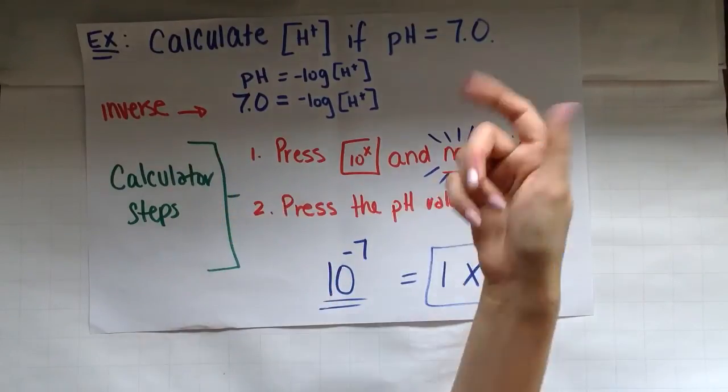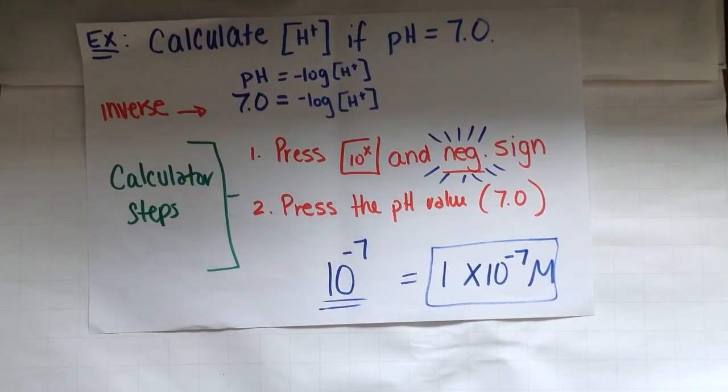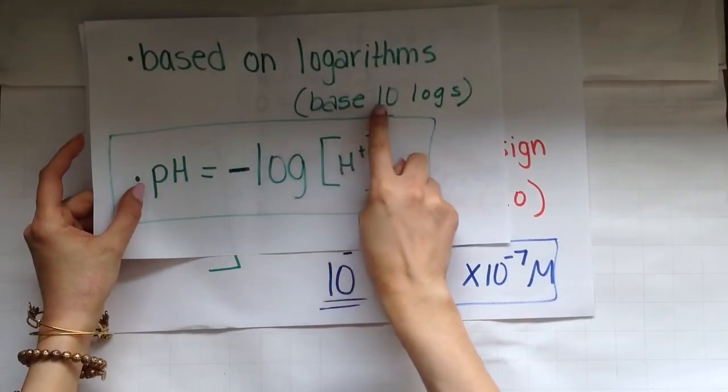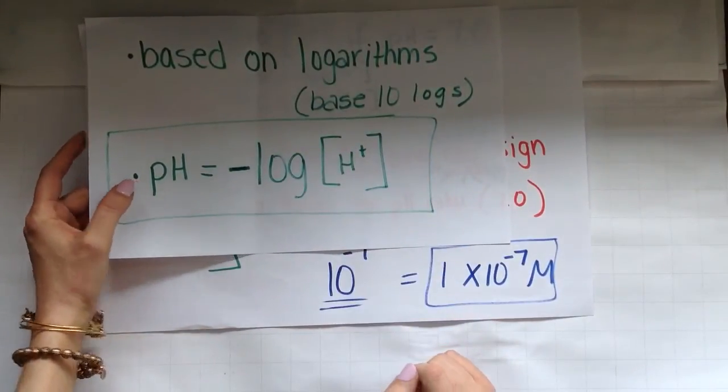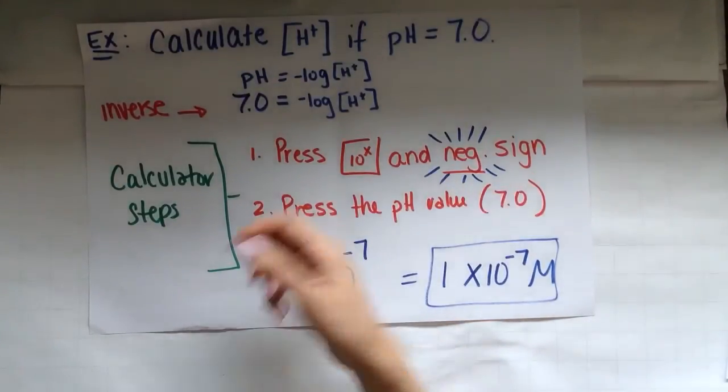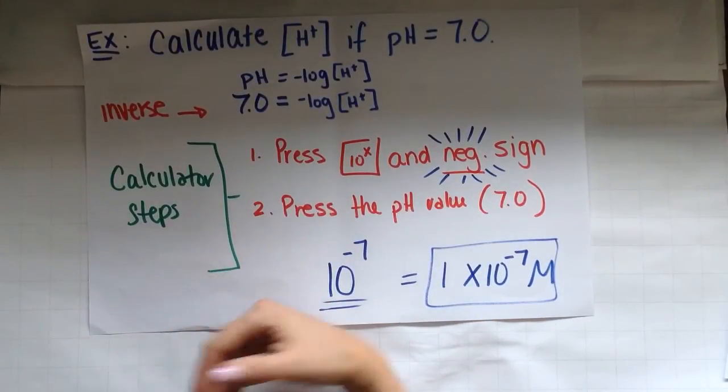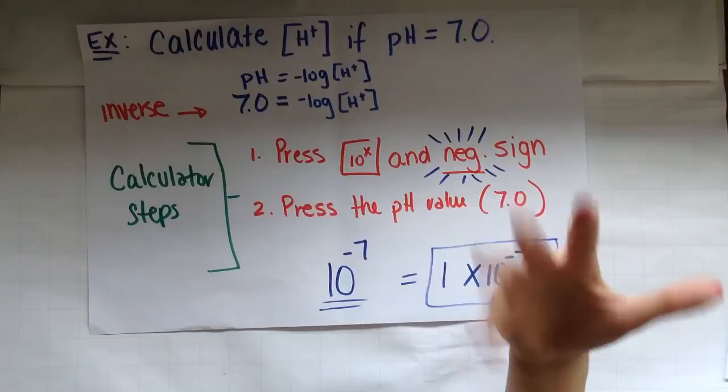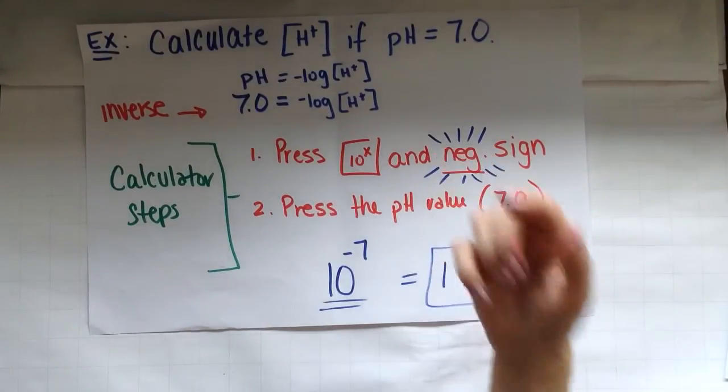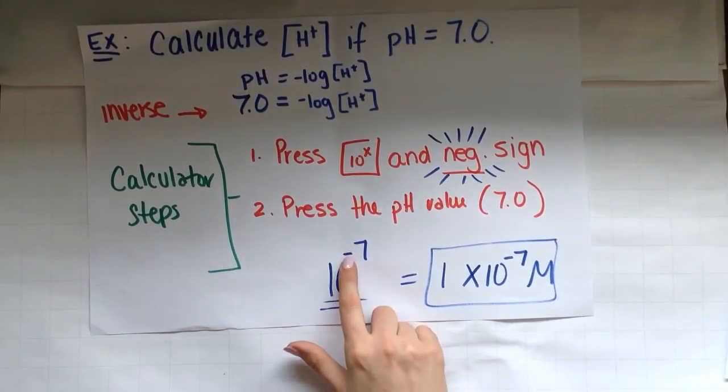The inverse for a pH. Remember in this slide here, we said log is a base 10. Logarithms involve base 10 logs. So in order to do the inverse, you're going to take 10 to the negative of the pH.